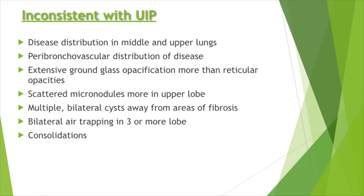Features inconsistent with UIP include: disease distribution in the middle and upper lungs; peribronchovascular distribution; extensive ground glass opacification more than reticular opacities, which may suggest NSIP; scattered micronodules in the upper lobes, suggesting sarcoidosis; bilateral multiple cysts away from areas of fibrosis; bilateral air trapping in three or more lobes suggesting hypersensitivity pneumonitis; and consolidations suggesting cryptogenic organizing pneumonia.